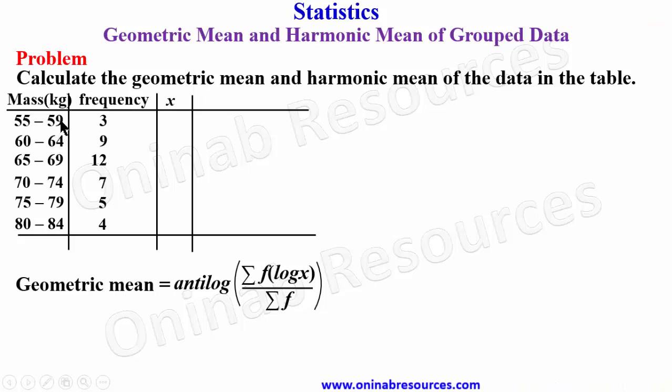So 55 plus 59 divided by 2 gives 57. 60 plus 64 divided by 2 gives 62. 65 plus 69 divided by 2 gives 67. 70 plus 74 divided by 2 gives 72. 75 plus 79 divided by 2 gives 77. And finally 80 plus 84 divided by 2 gives 82.